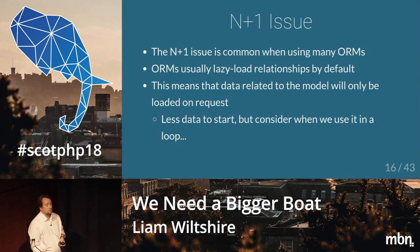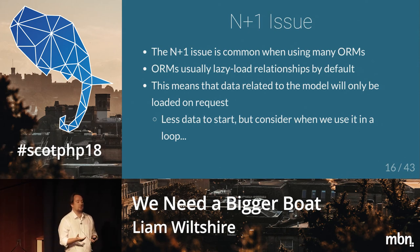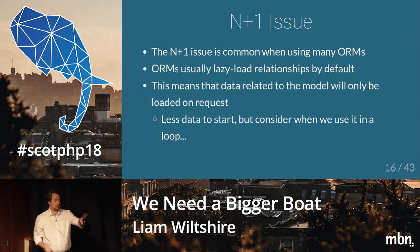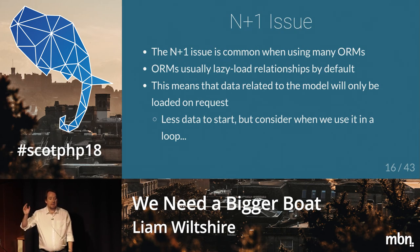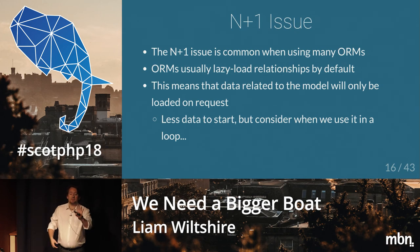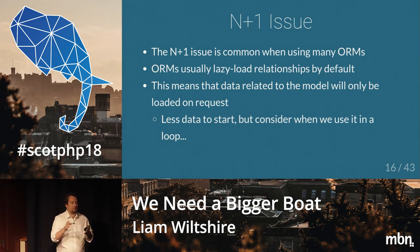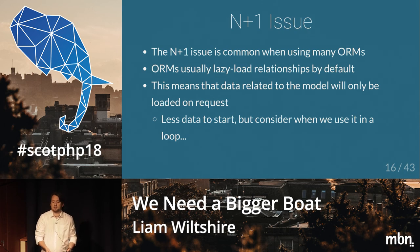One of the common performance issues is the N+1 problem. It's a common issue if you're using most ORMs. An ORM will tend to lazy load relationships by default — so if I've got a user with relationships to company, plan, and something else, the ORM won't load those relationships when you call for that user. It will only load them if you ask for them. That's actually a good thing, because it means you're loading less data to start with — if I just need the user's name, I don't need to load the plan or the company. Until you use it in a loop.